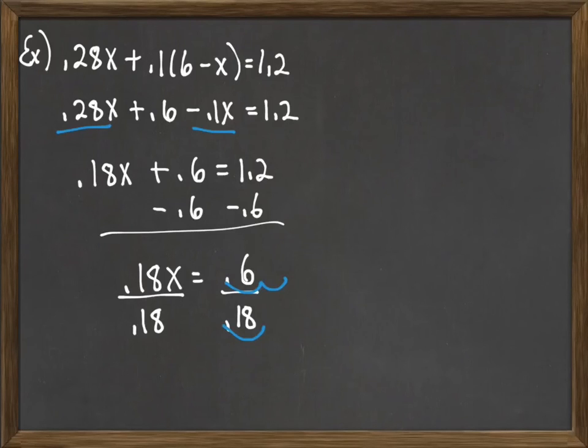Since we need two to get rid of the decimal in the bottom, we do the same in the top. At that point, we have x equals 60 divided by 18.